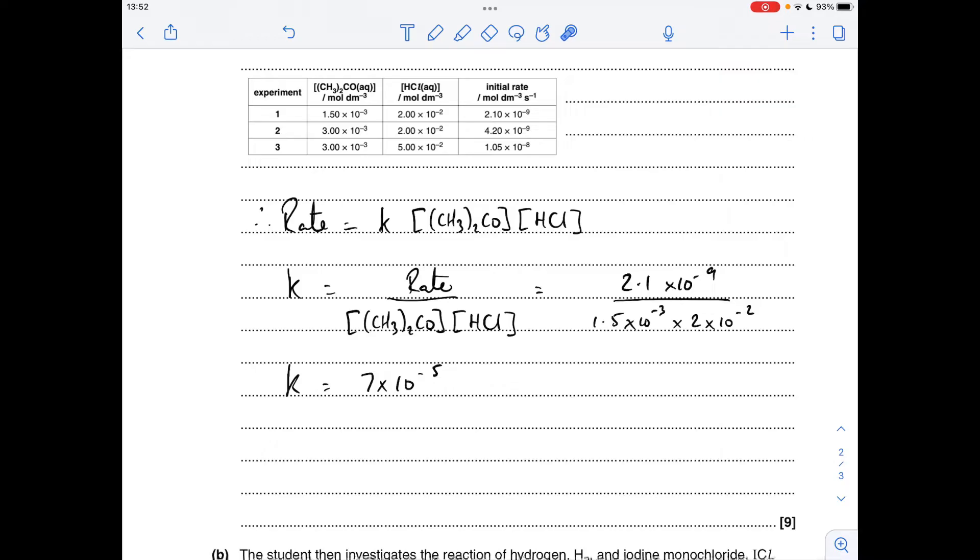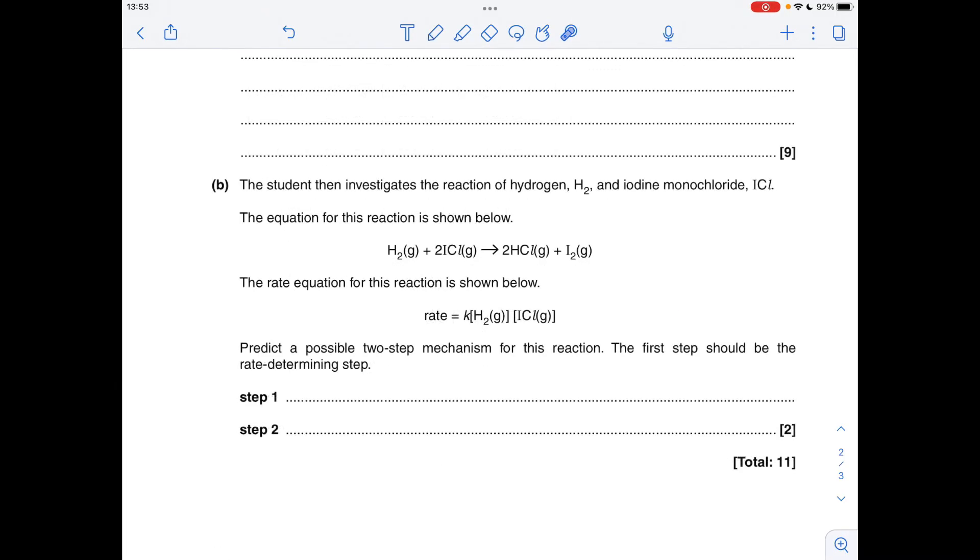Now obviously we need to work out the units as well, so I'm just going to change the numbers there to the units. So we've got the units of rate on the top, moles per decimeter cubed per second. And because we've got two lots of concentration, there's no powers involved, so it's just moles per decimeter cubed times moles per decimeter cubed. And then we can cancel moles per decimeter cubed on the top with one of the ones on the bottom, and then all we do is take this up to the top and flip the signs. So there's the units there: dm³ mol⁻¹ s⁻¹.